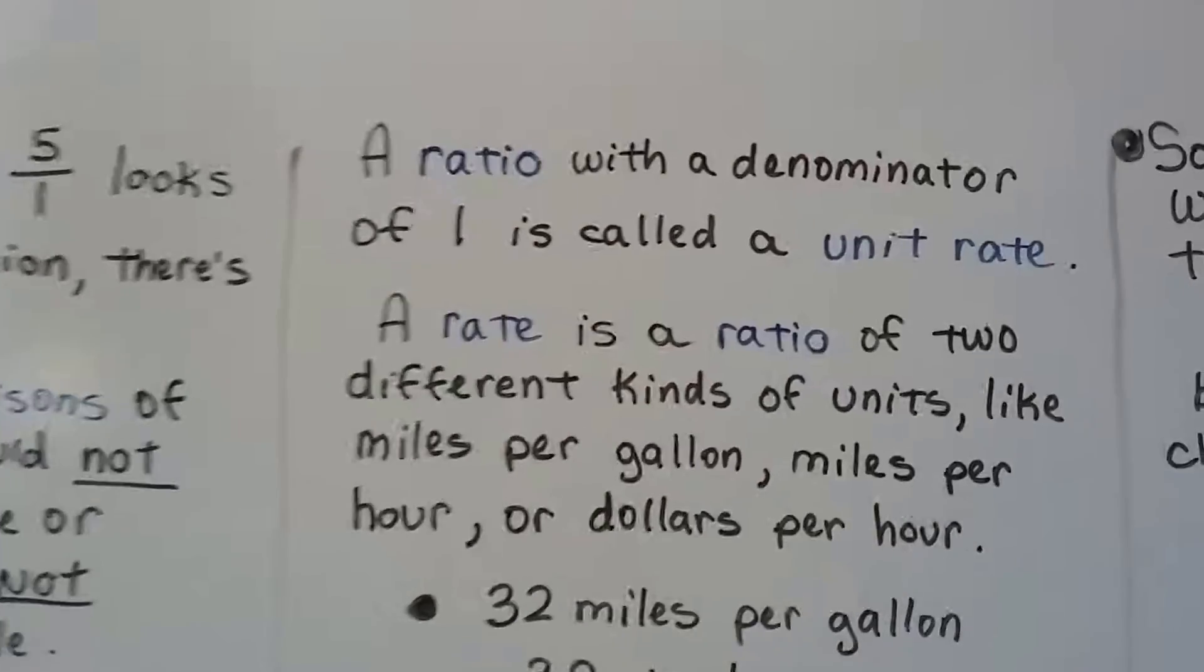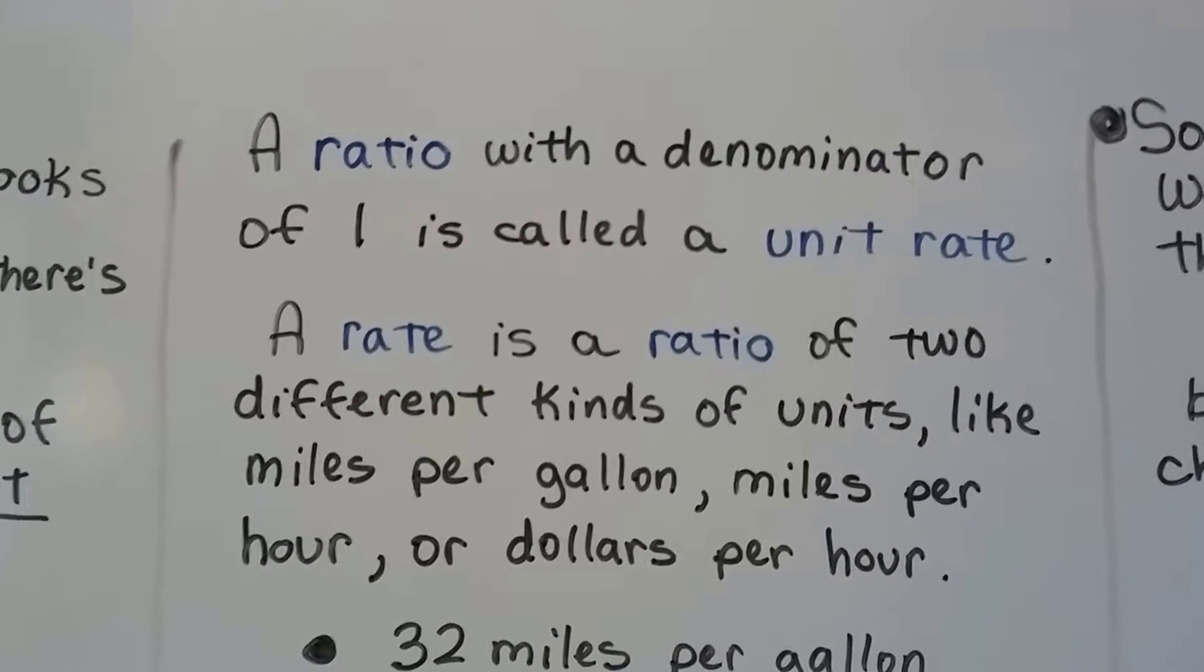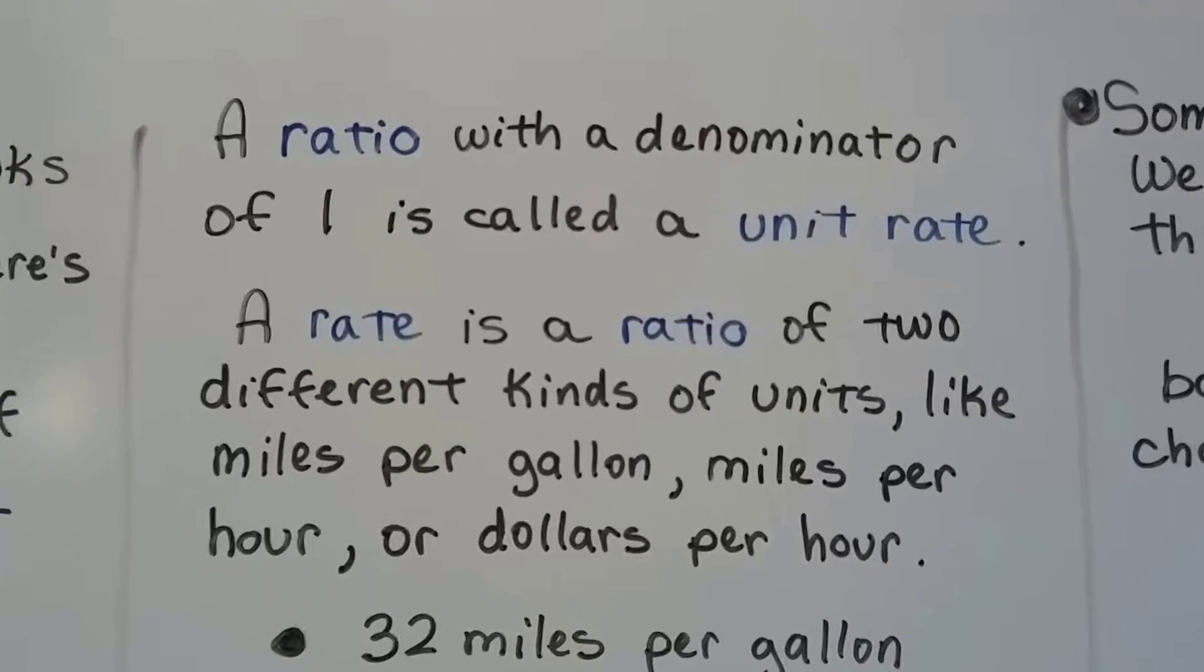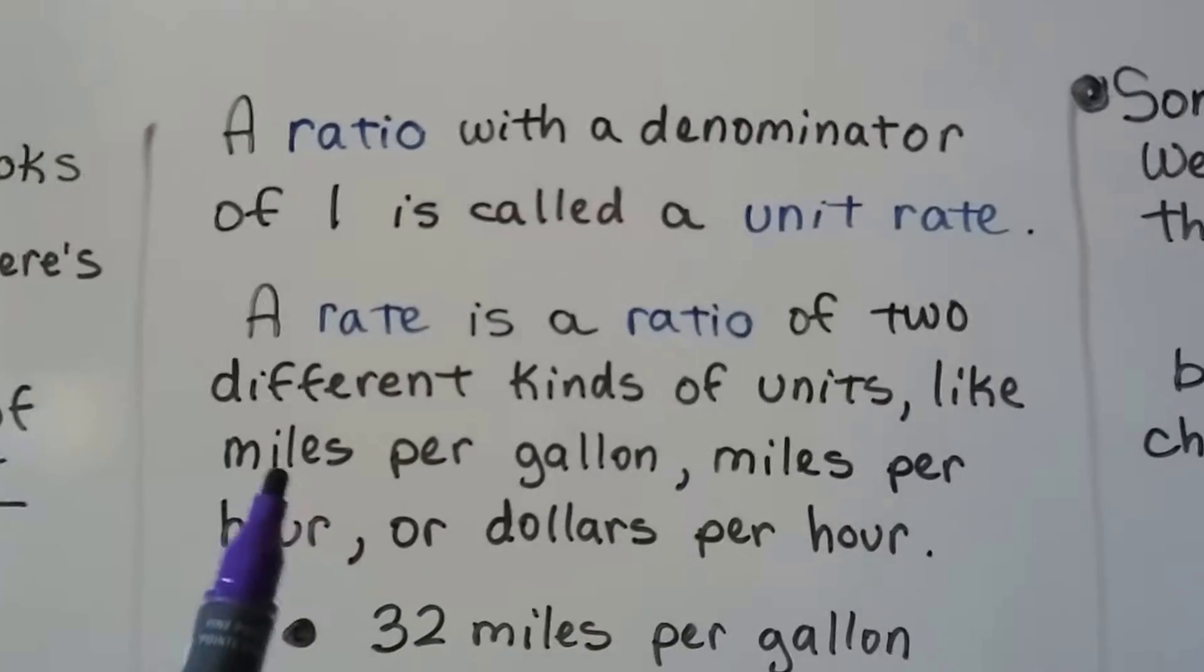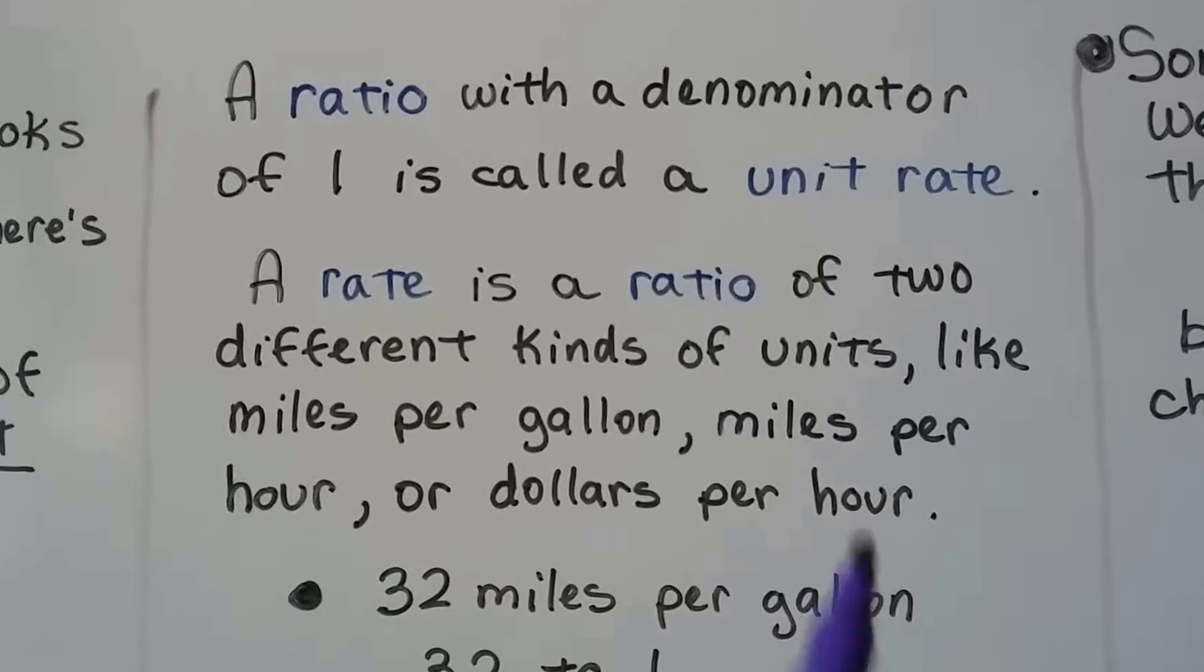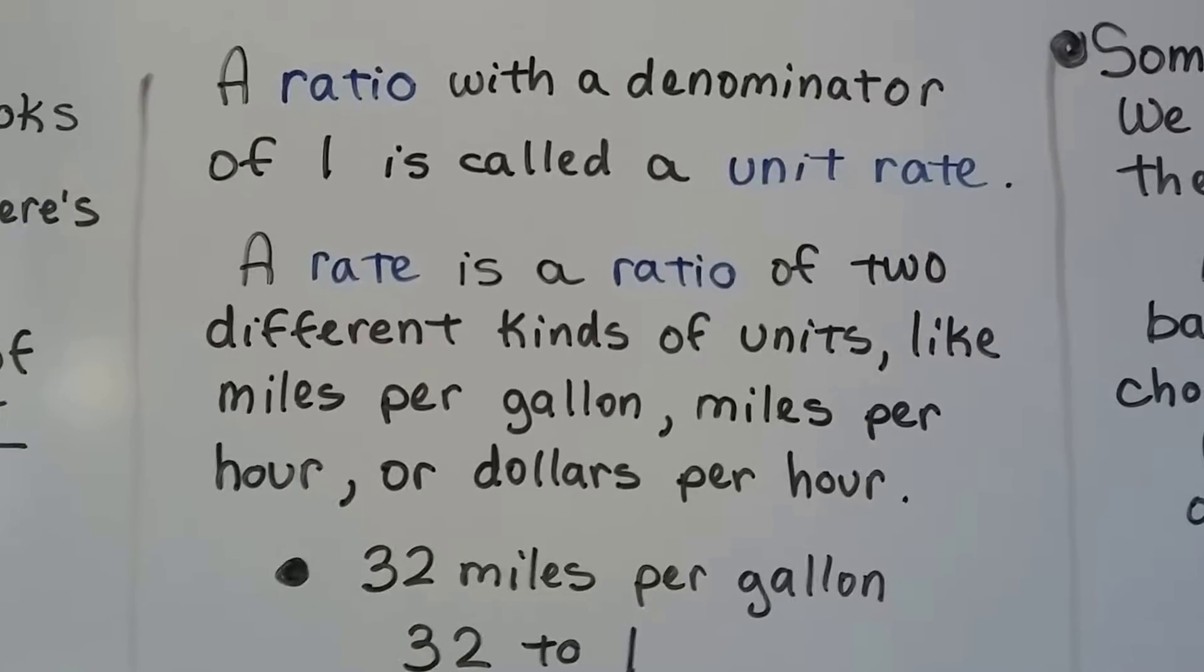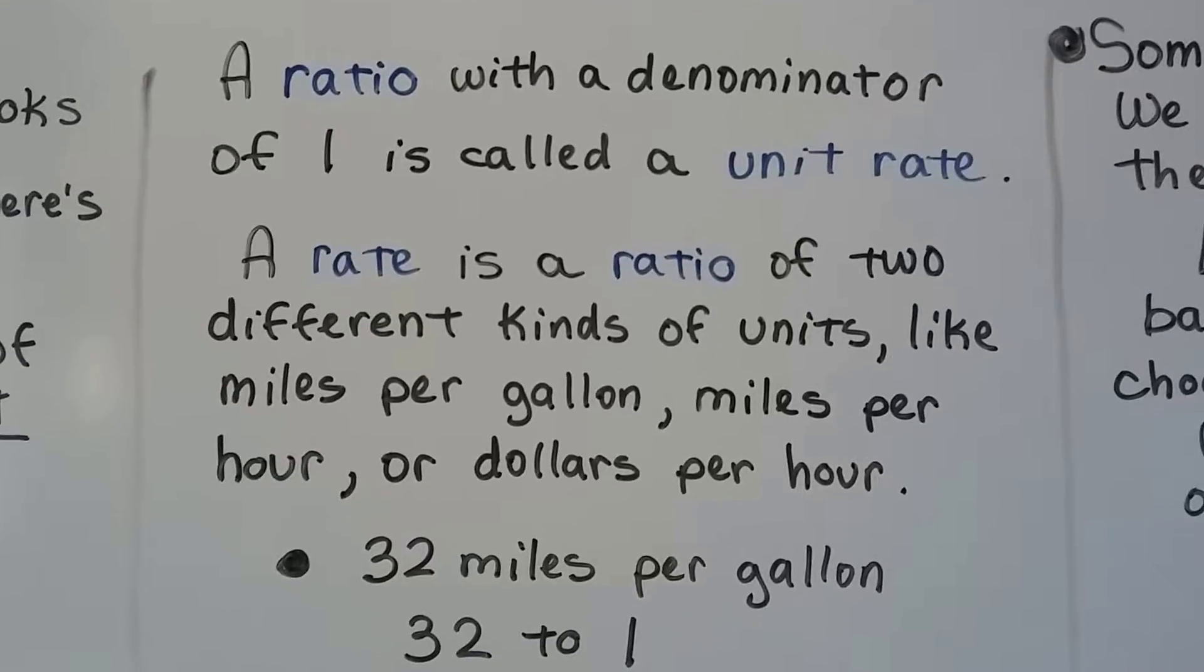A ratio with a denominator of 1 is called a unit rate. A rate is a ratio of two different kinds of units, like miles per gallon or miles per hour, dollars per hour. It's two different kinds of units - you're comparing miles and gallons, miles and hours, or dollars and hours. Or even a water faucet that has so many gallons per minute. You're comparing gallons to minutes.